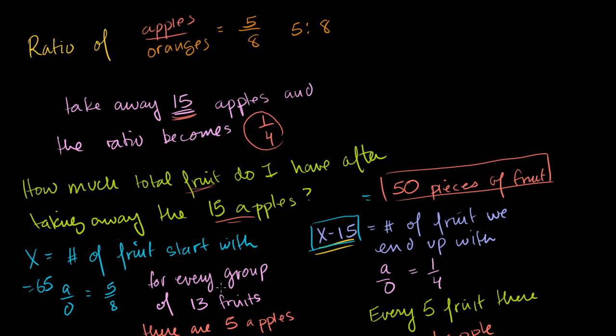The last time I talked through it and used a lot of words. Let's see if we can do it a little bit more algebraically. Let A equal the number of apples we are starting with, and let O equal the number of oranges. That doesn't change throughout the whole problem.